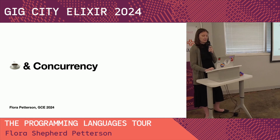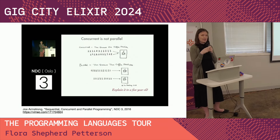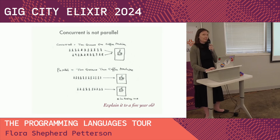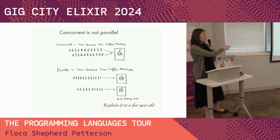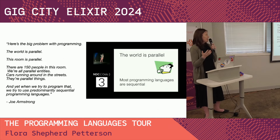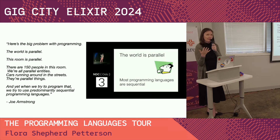So, coffee and concurrency. In 2018, Joe Armstrong, one of the creators of Erlang, gave this talk where he showed a slide to illustrate the difference between concurrency and parallelism. When he was at Ericsson, he was sitting waiting for coffee, and the thought came to him of how to explain concurrency. Concurrency is one coffee pot with two lines of people trying to get their coffee. Parallelism is two queues, two coffee machines. He says this is the problem with programming — the world is parallel. There are 150 people in this room, all parallel entities. But when we program things, we try to think of them predominantly sequentially.